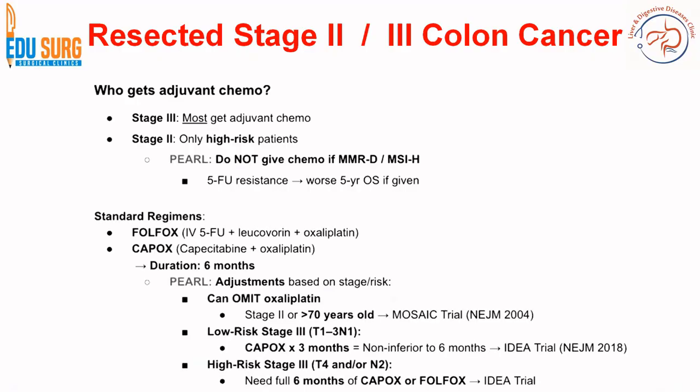So what are the currently used standard regimens in resected stage 2 or 3 colon cancer? We give Folfox or Capox, with a usual duration of 6 months. Oxaliplatin is omitted in stage 2 or when the patient is greater than 70 years old — this is based on the MOSAIC trial.